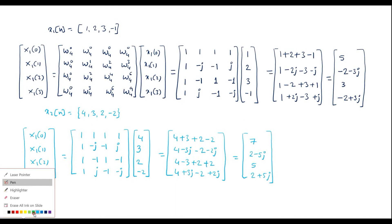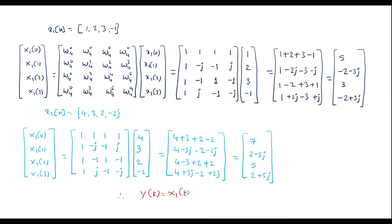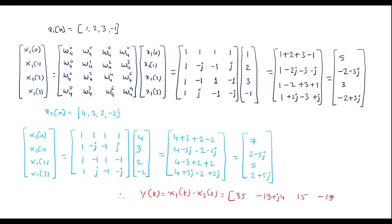Therefore, Y(k) = X1(k) × X2(k). The X1(k) values are multiplied with X2(k) element by element: 5 × 7 = 35; then (−2−3j)(2−5j) = −19 + 4j; then 5 × 3 = 15; then (−2+3j)(2+5j) = −19 − 4j. So Y(k) = [35, −19+4j, 15, −19−4j].